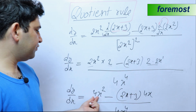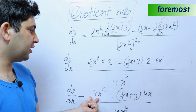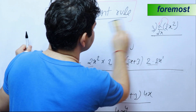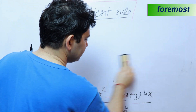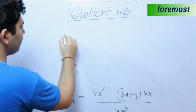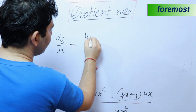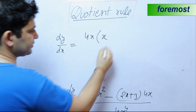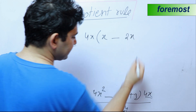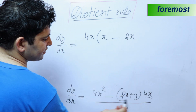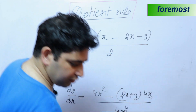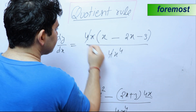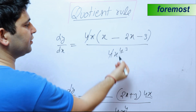In both terms in the numerator, we can take 4x as common. Taking 4x common: from 4x squared we are left with x, and from the 2x plus 3 term — multiplying through the minus — we get minus 2x and minus 3. So the numerator becomes 4x into x minus 2x minus 3, divided by 4x to the power 4. The 4 and 4 cancel out, and one x cancels, leaving x to the power 3 in the denominator.